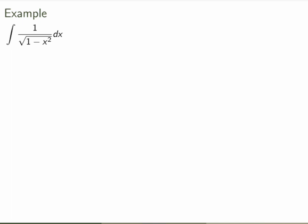Let's work through an example. Suppose I want to calculate the integral of 1 over the square root of (1 minus x squared) dx. If you remember what we've seen in previous weeks, you should probably know the answer right away, because 1 over the square root of (1 minus x squared) is exactly the derivative of the inverse sine function.